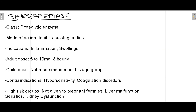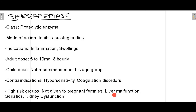The last commonly prescribed drug in dentistry for pain is serrapeptase. It belongs to the class of proteolytic enzymes, and its mode of action is inhibition of prostaglandins that cause pain. It is mainly indicated for inflammation and swelling, as swelling tends to lead to pain. For adults, 5–10 mg is given every 8 hours. Serrapeptase is not recommended for children as it is detrimental for them. Contraindications include hypersensitivity reactions and coagulation disorders. High-risk groups include pregnant females, patients with liver malfunction, geriatric patients, and those with kidney dysfunction.